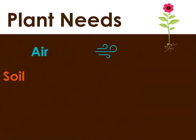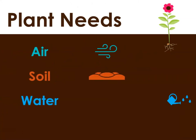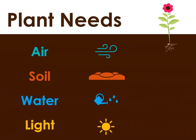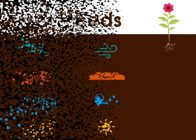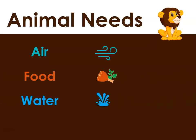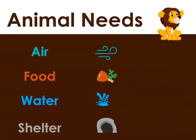These are the things plants need: air, soil, water, and light. These are the things animals need: air, food, water, and shelter.